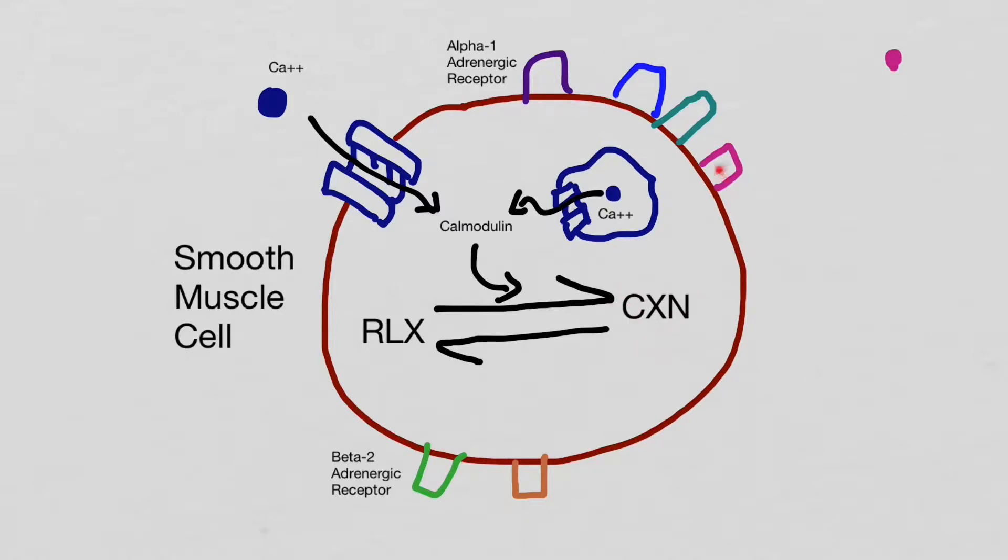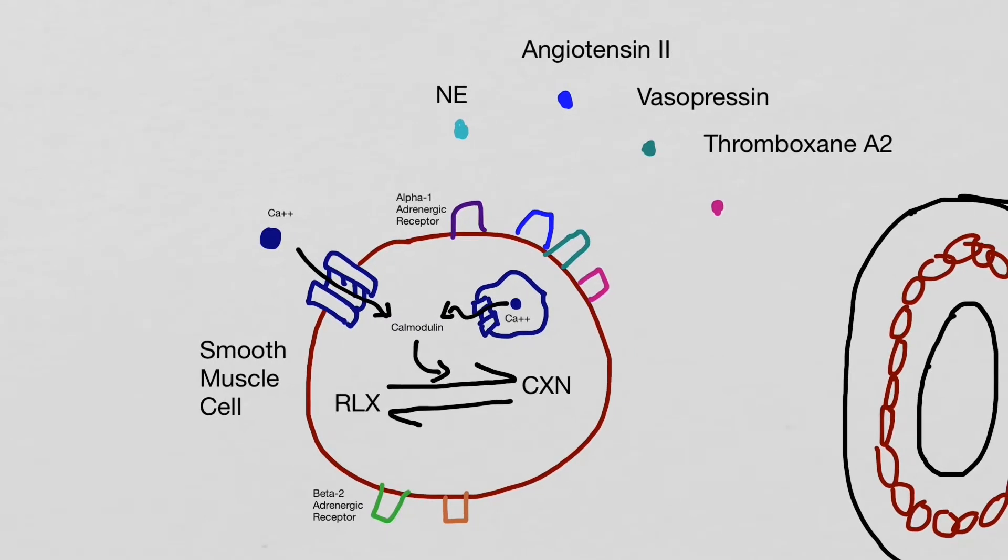There are many receptors on the cell membrane to cause the smooth muscle to contract. An example of a chemical that will cause smooth muscle contraction is norepinephrine. Norepinephrine will stimulate the alpha-1 adrenergic receptor to cause contraction of the smooth muscle.